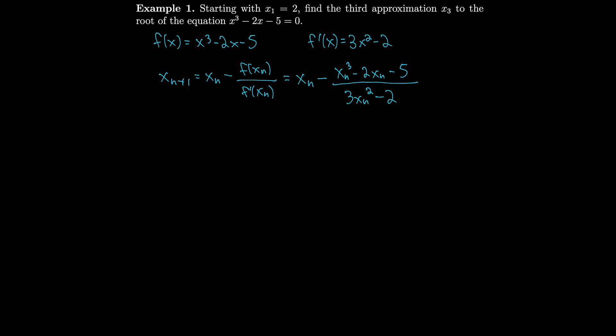Let's start with n = 1 because we want to get up to the third approximation. For n = 1, we have x₂, our next approximation, is equal to x₁, our previous one, minus f(x₁) over f'(x₁). So that's x₁ minus (x₁³ - 2x₁ - 5) over (3x₁² - 2).